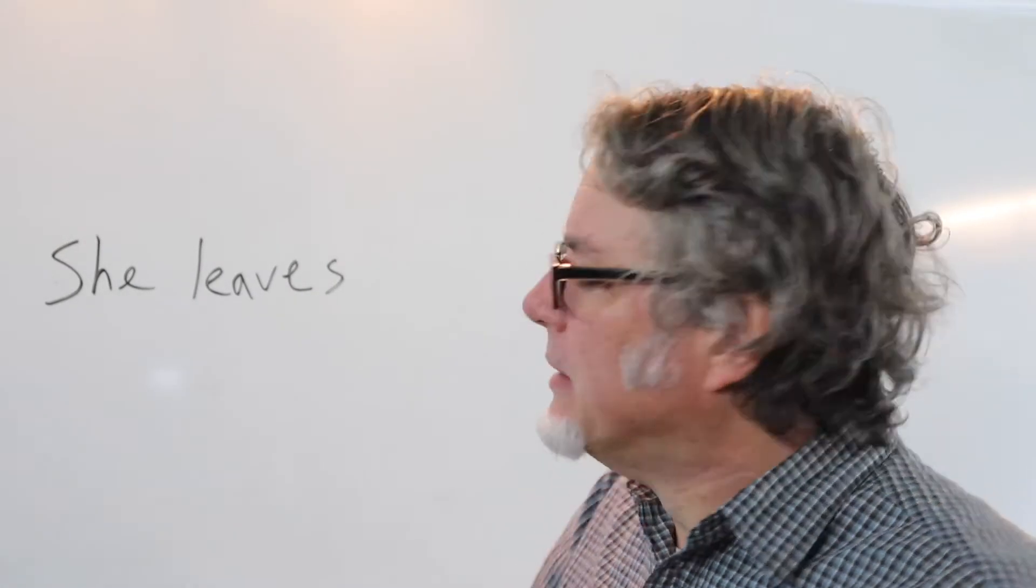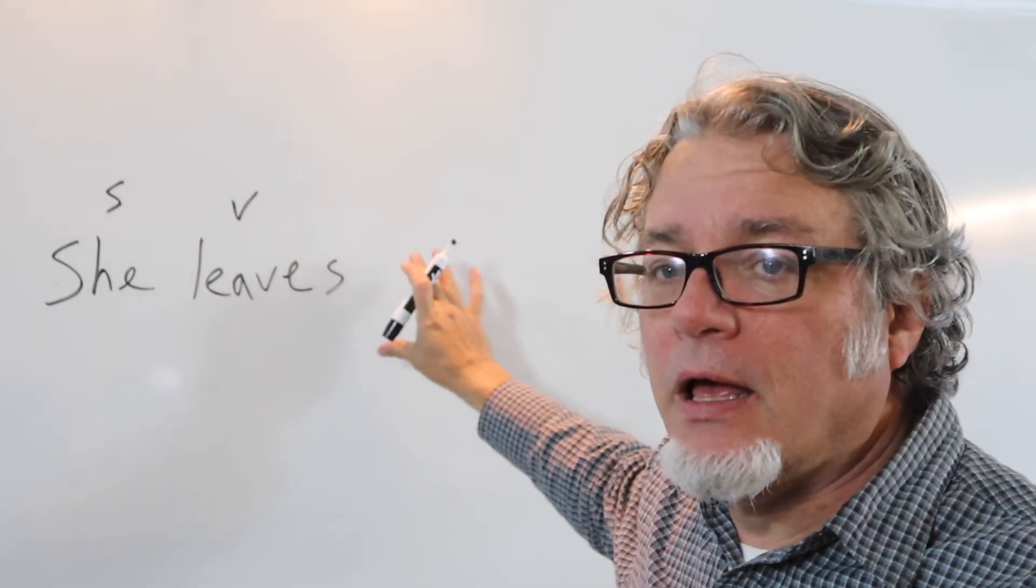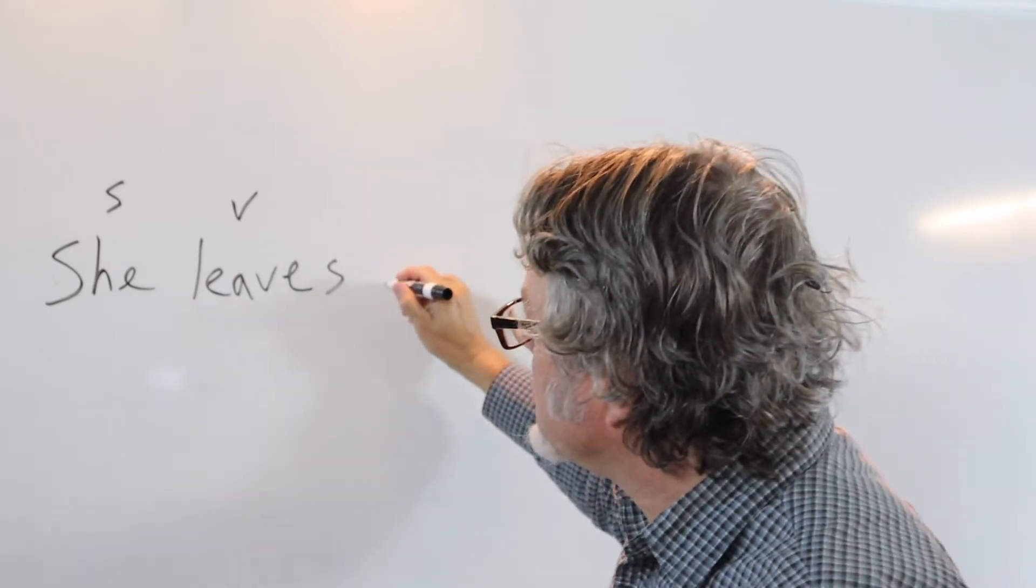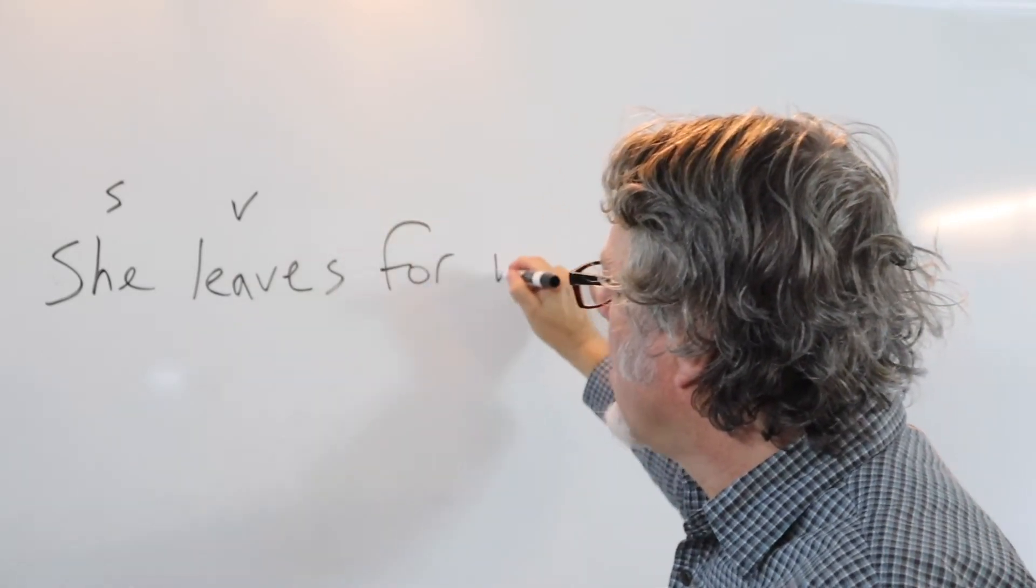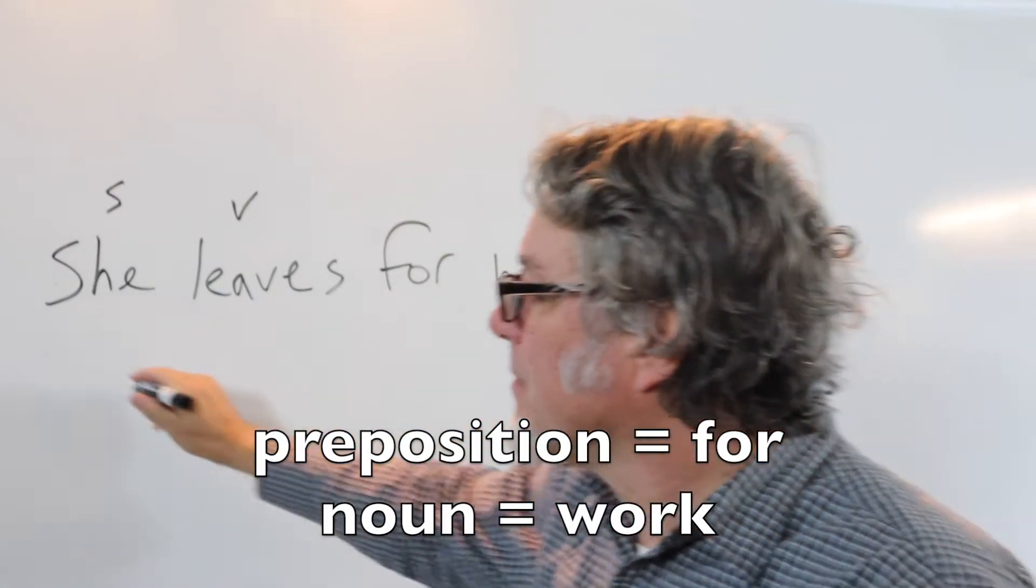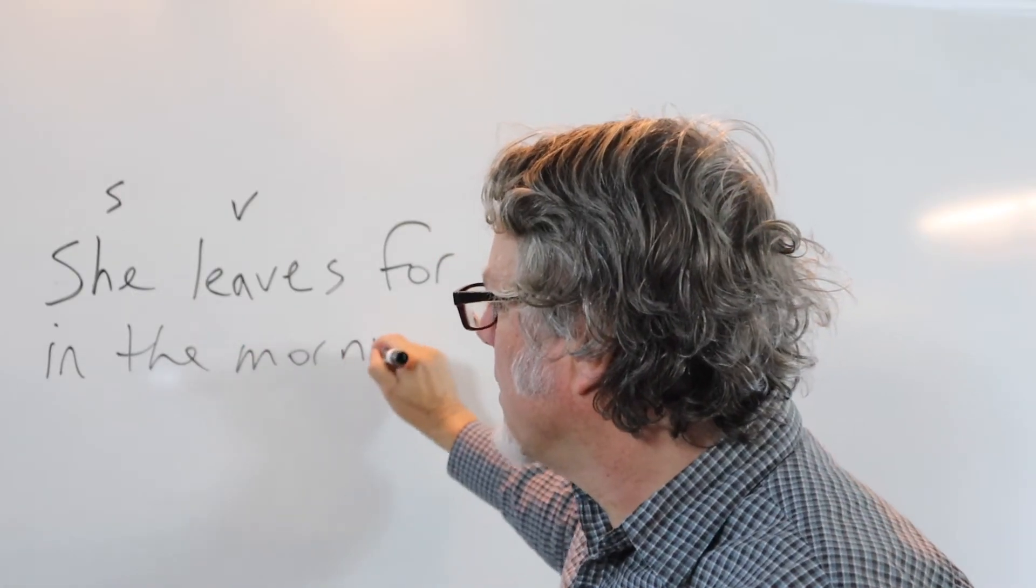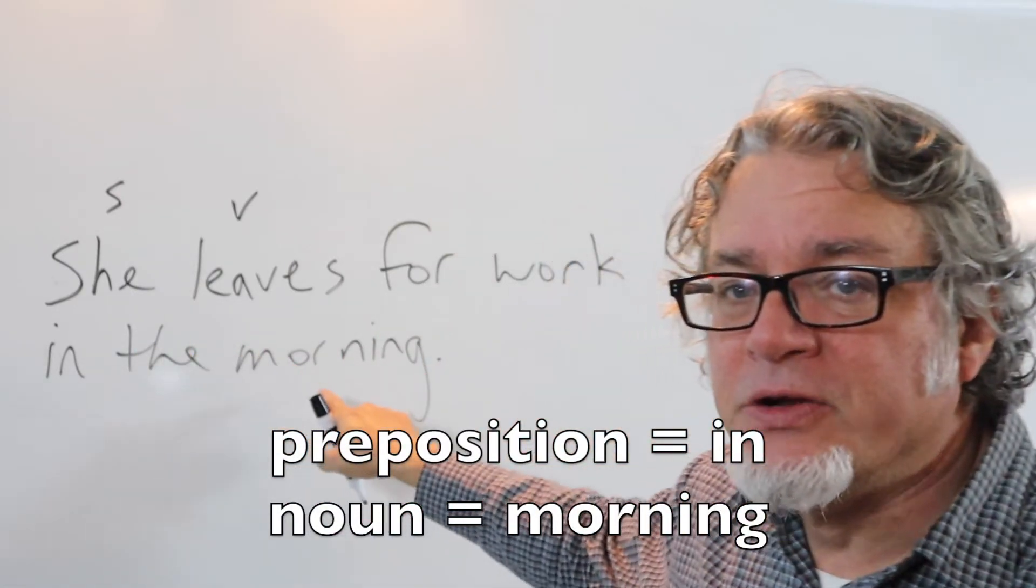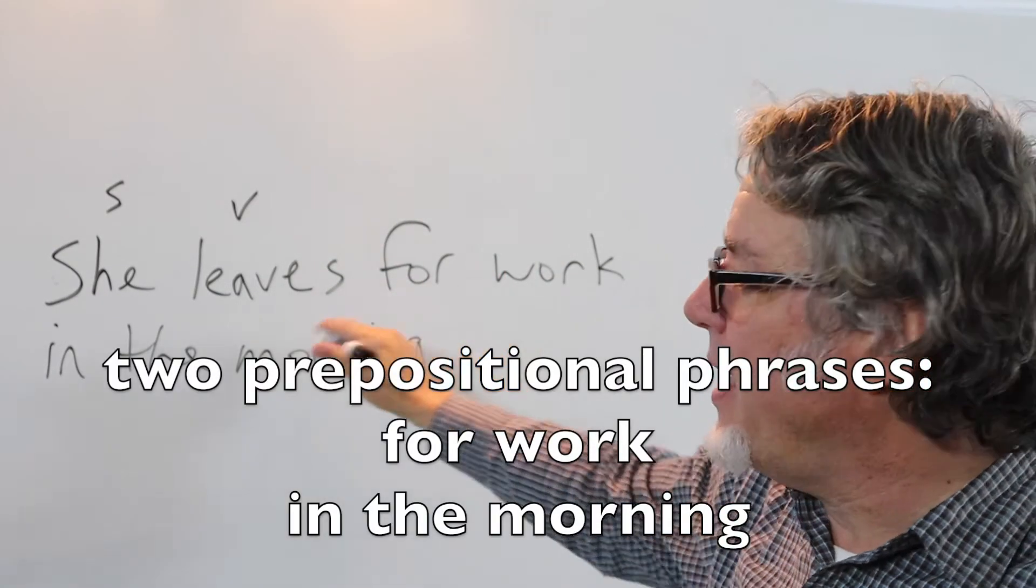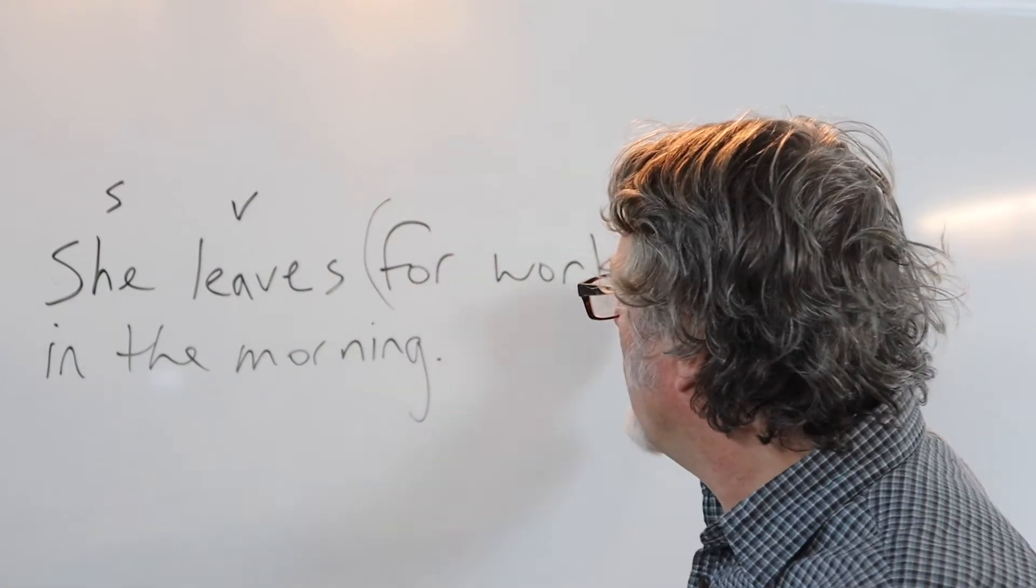She leaves. Here's the subject, and then here's the verb. I can add on to this prepositional phrases. She leaves for work. We have a preposition and a noun. In the morning. There's a preposition, and here's a noun. So there are two prepositional phrases after she leaves.